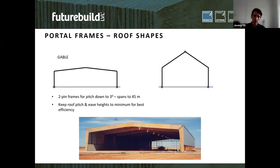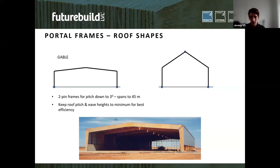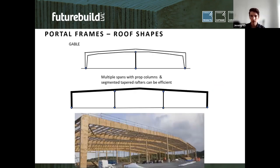Common portal frame shapes include the gable, which is the most typical. With LVL portal frames, a two-pin frame is generally most efficient: pins at the base, rigid connections at the eave and ridge. For low pitches it makes sense to fix the ridge; once you reach a certain roof pitch, the fixity at the ridge isn't doing much, so you introduce a pin instead for a three-pin frame. Keeping roof pitch and eave height down reduces lateral loading and improves efficiency.